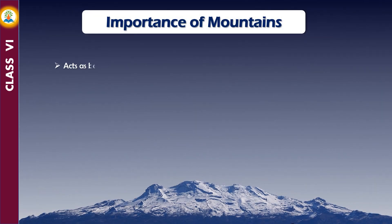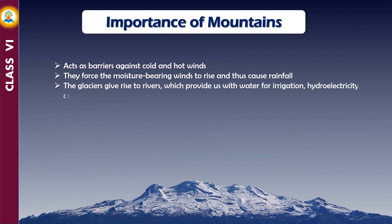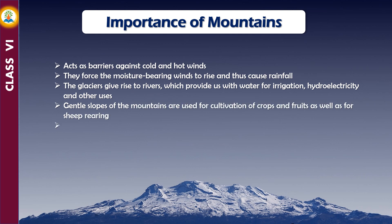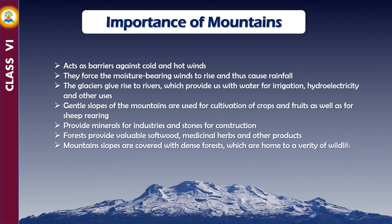Mountains act as barriers against cold and hot winds. They force moisture-bearing winds to rise and thus cause rainfall. Glaciers give rise to rivers which provide water for irrigation, hydroelectricity, and other uses. Gentle slopes are used for cultivation of crops, fruits, and sheep rearing. Mountains provide minerals for industries and stones for construction. Dense forests on mountain slopes provide valuable softwood, medicinal herbs, and are home to a variety of wildlife. Mountains are also very important for tourism.